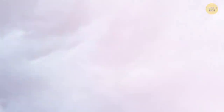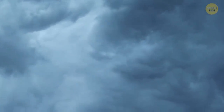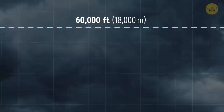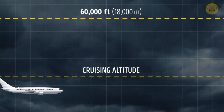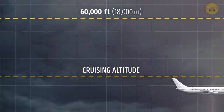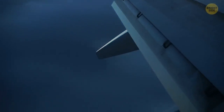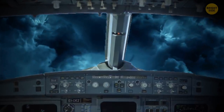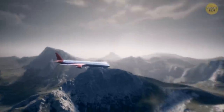As for a thunderstorm, it can create gigantic cloud structures whose tops can reach more than 60,000 feet — almost twice higher than the average cruising altitude of commercial airplanes. So when an airplane comes across a thunderstorm, pilots either try to find a roundabout route or simply turn back.